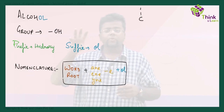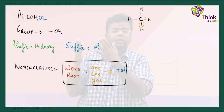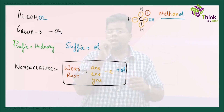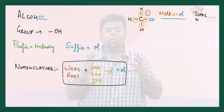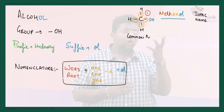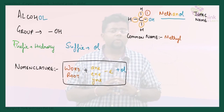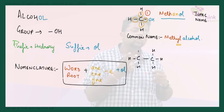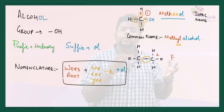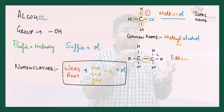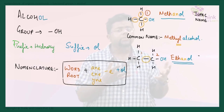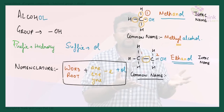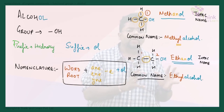For the first example, this would be methane, but if I replace the H with OH, this becomes methanol. The common name is methyl alcohol. Similarly, for the second example with a two-carbon chain, that should be ethane, but if I replace the H with OH, it becomes ethanol, and the common name becomes ethyl alcohol.